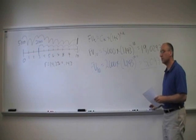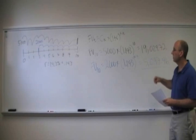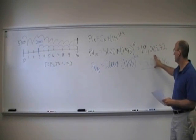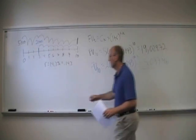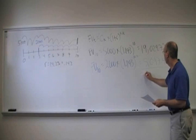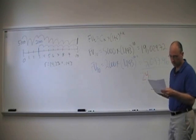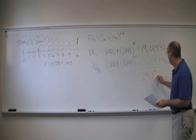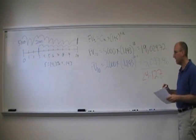And now we just need to add up what the $5,000 grows into after being invested for 10 years, and what the $2,000 grows into for being invested for 7 years, and what do we come up with? We come up with $24,127.18.